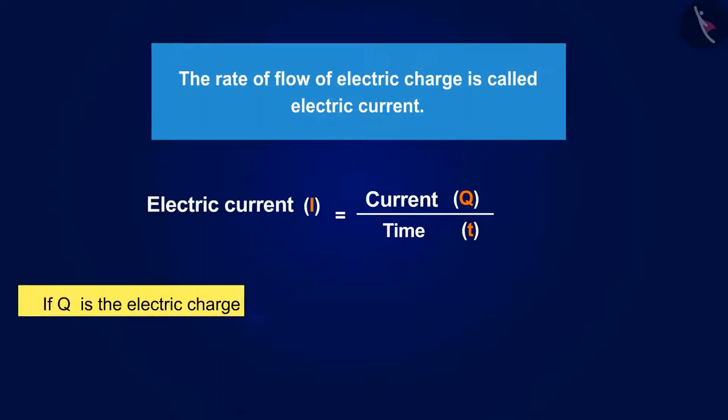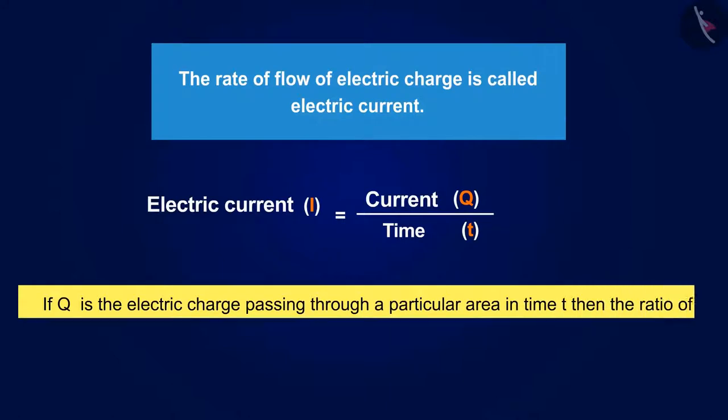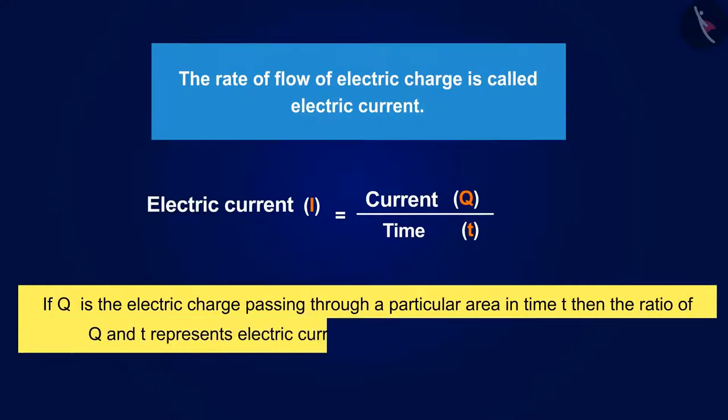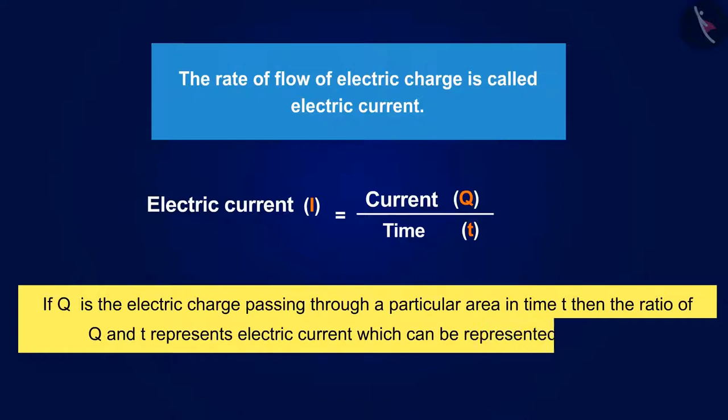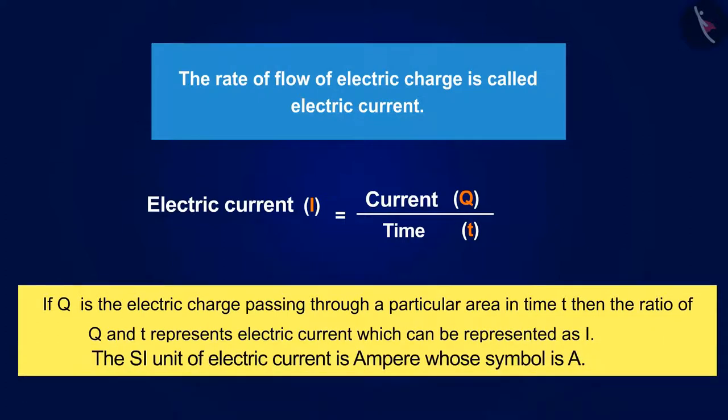If Q is the electric charge passing through a particular area in time T, then the ratio of Q and T represents electric current which can be represented as I. The SI unit of electric current is ampere whose symbol is A.